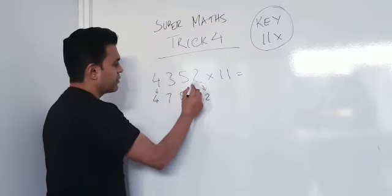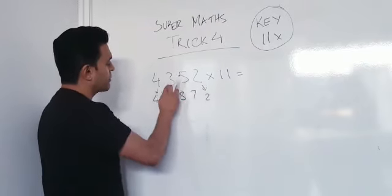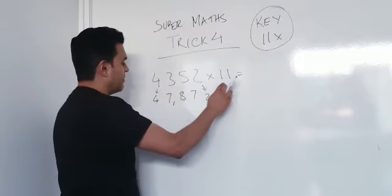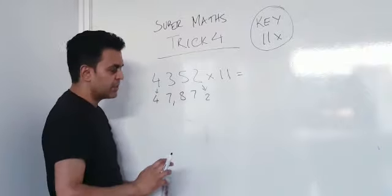5 plus 2, 7. So, 4,352 times 11 is 47,872. See the system. See how easy it is.